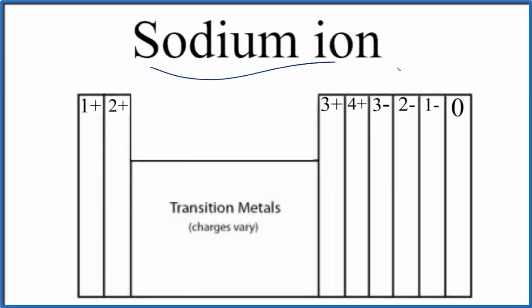Let's write the formula for the sodium ion. So if we go to the periodic table, we look up just sodium, the element sodium. That's Na, that's its element symbol.